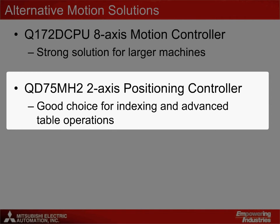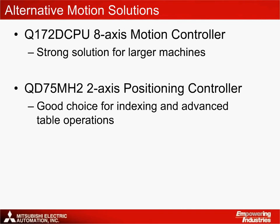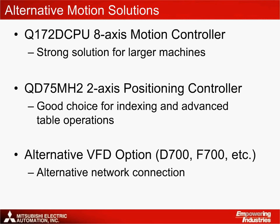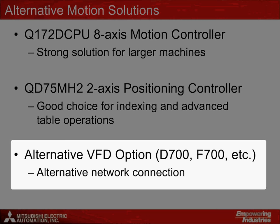It's a good choice for wrapping applications with basic indexing movements. Instead of the E700 inverter for controlling the main product conveyor, a D700 or F700 inverter can also be used. This provides an alternative network connection or simple control via an external analog or digital signal.